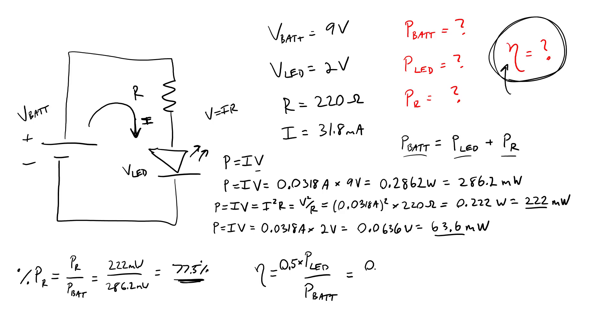So if we want to actually calculate an overall efficiency value for this circuit, how much of the electrical energy delivered from the battery is actually converted to light, we plug in our LED power and our battery power with that extra factor of 0.5, and we get an overall efficiency of just over 11% for this circuit.